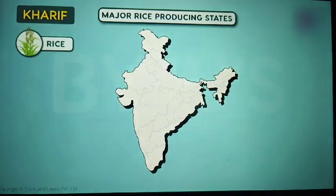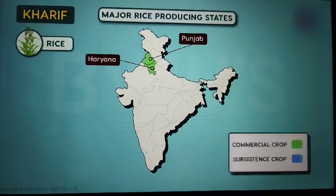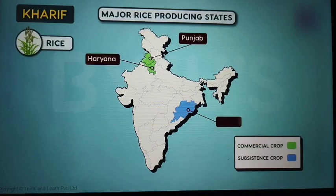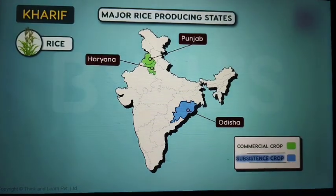What are the crops that come under commercial farming? It is a little bit tricky, because the degree of commercialization varies from one region to another. For instance, in Haryana and Punjab, rice is a commercial crop. But in Odisha, it is a subsistence crop.